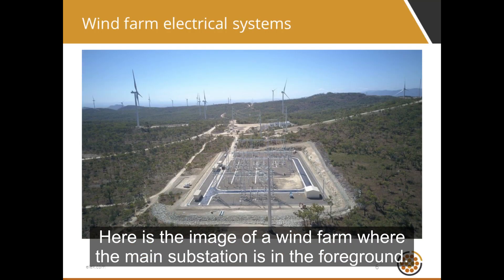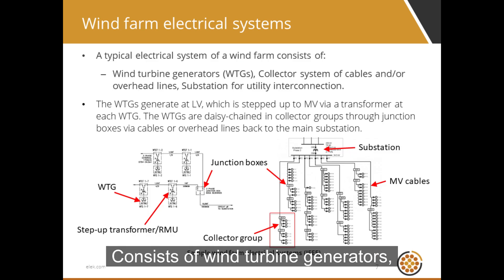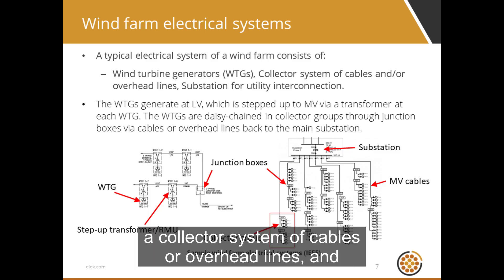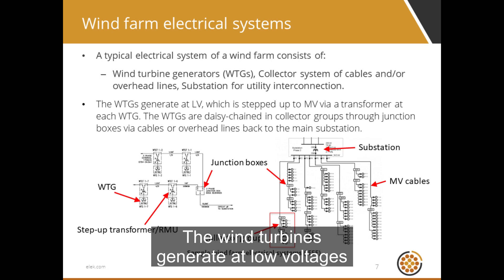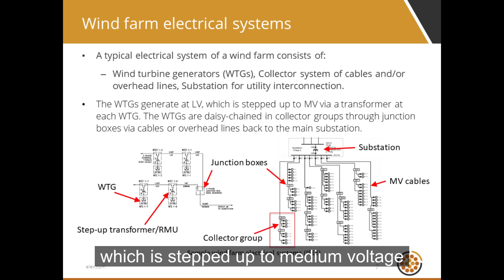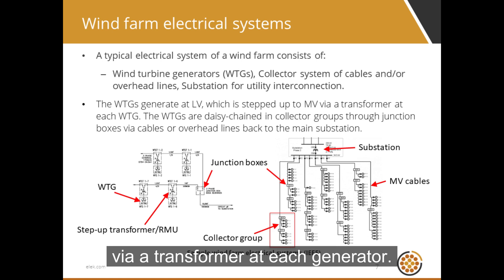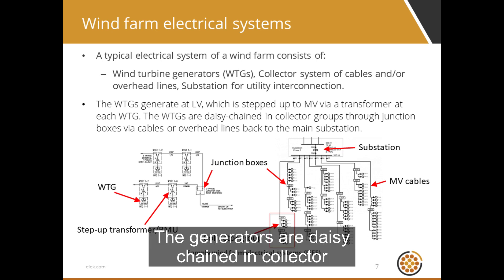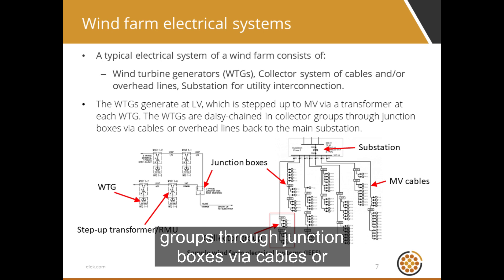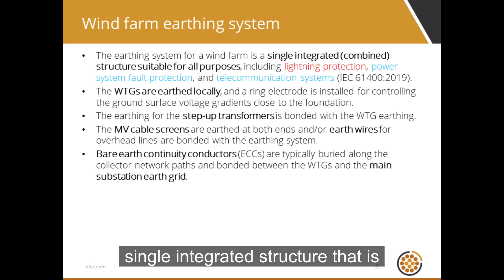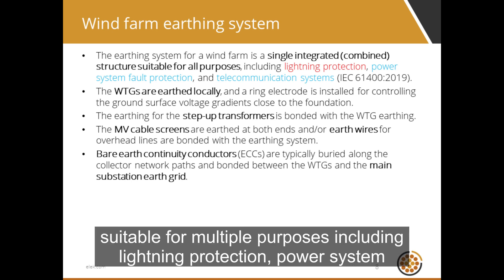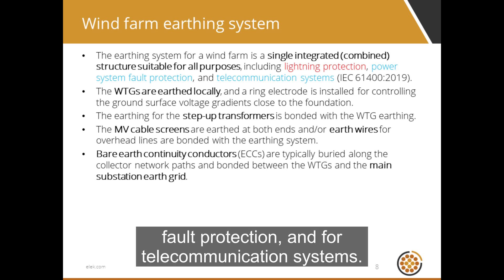We will start with discussing how to perform the earthing design and modeling for a wind farm. Here is an image of a wind farm where the main substation is in the foreground. The electrical system of a wind farm consists of wind turbine generators, a collector system of cables or overhead lines, and a substation for utility interconnection. The wind turbines generate at low voltages, stepped up to medium voltage via a transformer at each generator. The generators are daisy-chained in collector groups through junction boxes via cables or overhead lines to the main substation. The wind farm electrical system is a single integrated structure suitable for lightning protection, power system fault protection, and telecommunication systems.